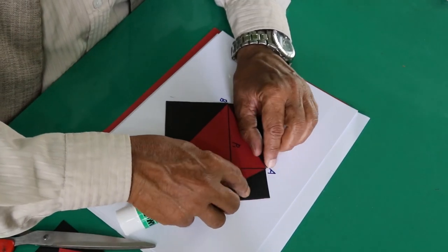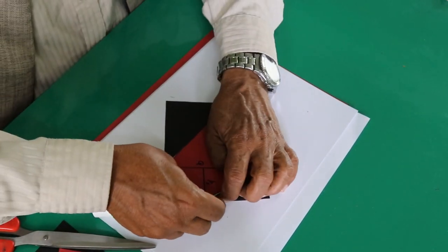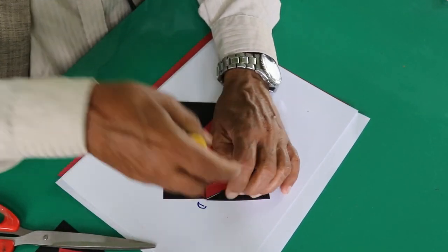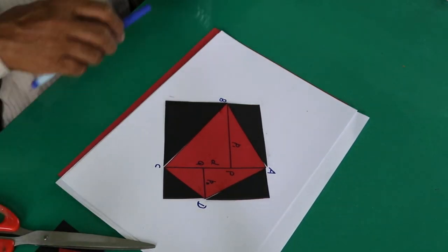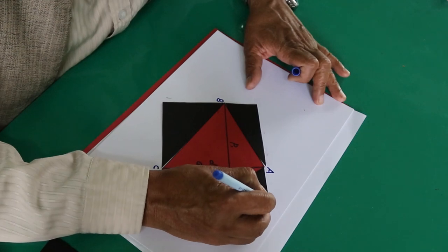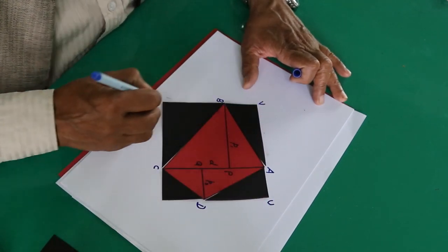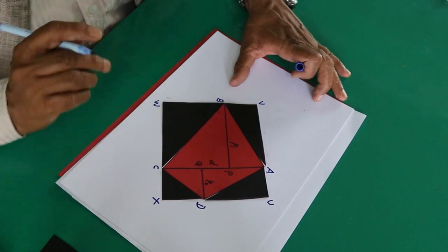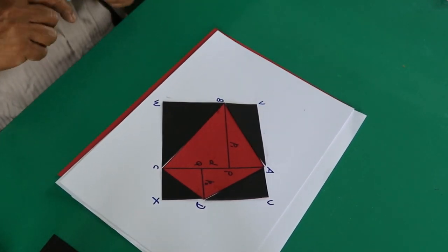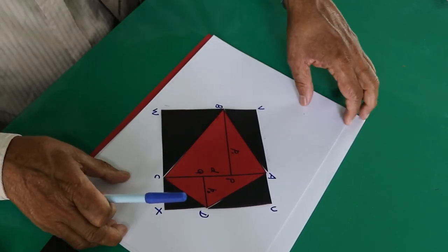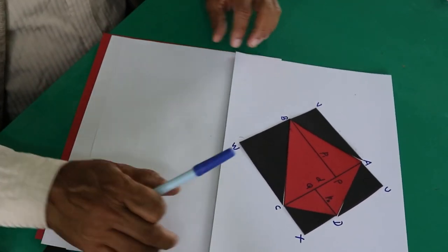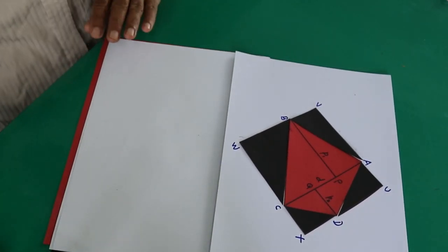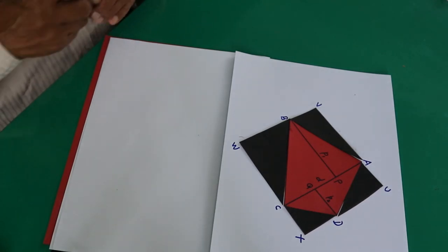That one is the rectangle UBWX, you can say any name can be given. Now what can you say after this? Now comes the interpretation, analysis, presentation, whatever you say.